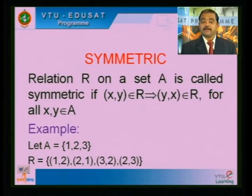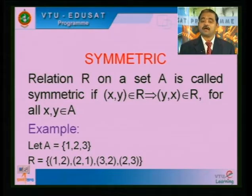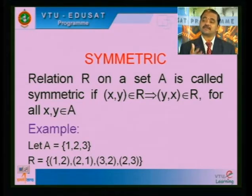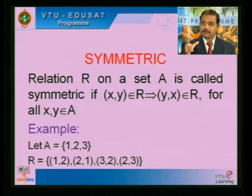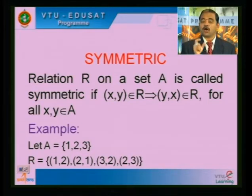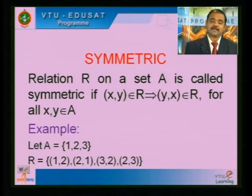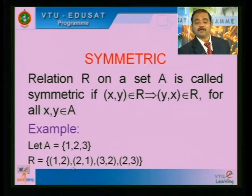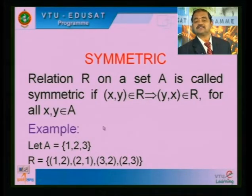Then symmetry: a relation R on a set A is called symmetric if (x, y) belongs to R implies (y, x) belongs to R. If an element (x, y) is in R, then its reverse element (y, x) should also be in R. If such a condition exists, then such a relation is called symmetric. For example, A = {1, 2, 3}: if (1,2) is in R, it should also contain (2,1); if (3,2) is in R, it should contain (2,3).